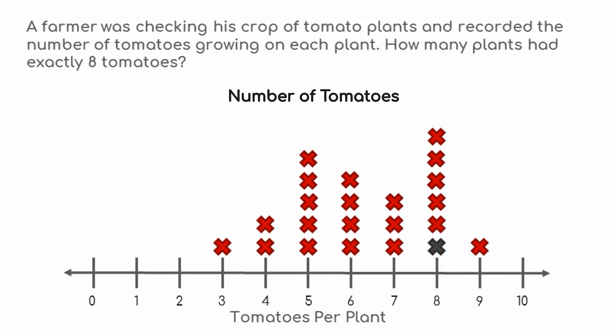We need to count all the X's in the column showing the number of plants with eight tomatoes: one, two, three, four, five, six. There are six X's, so six plants had exactly eight tomatoes.